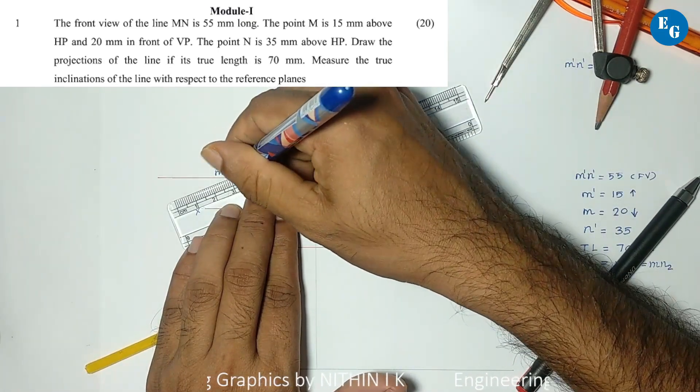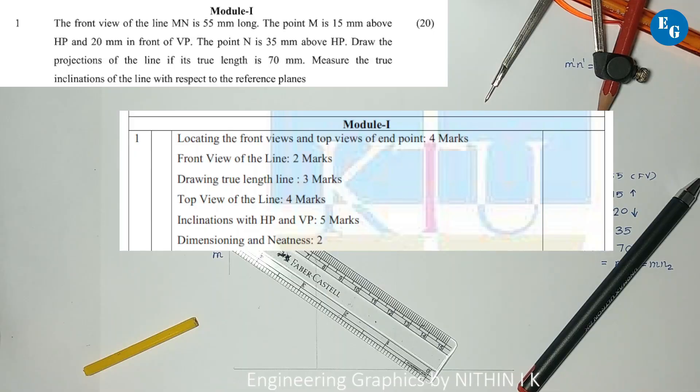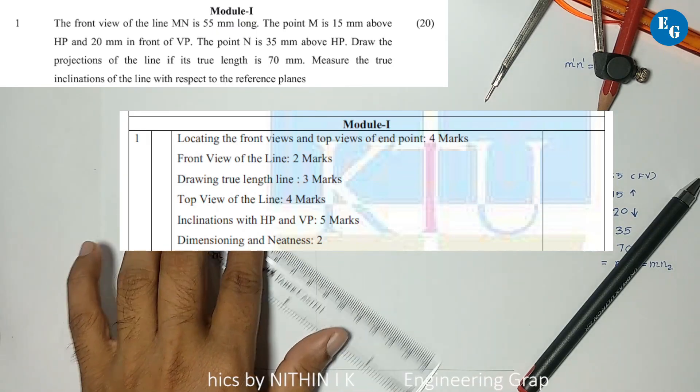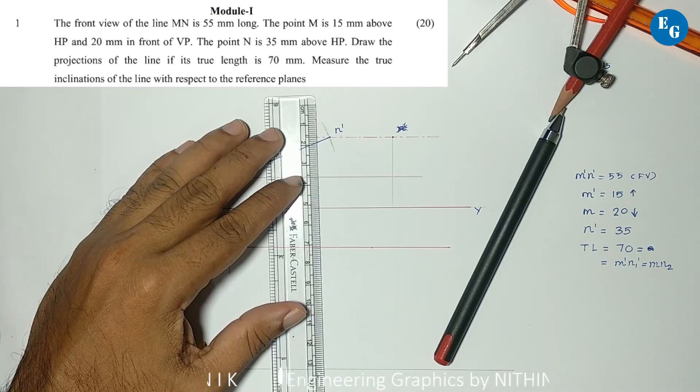Draw M dash N dash with thick line. Now we use the rotating line method.